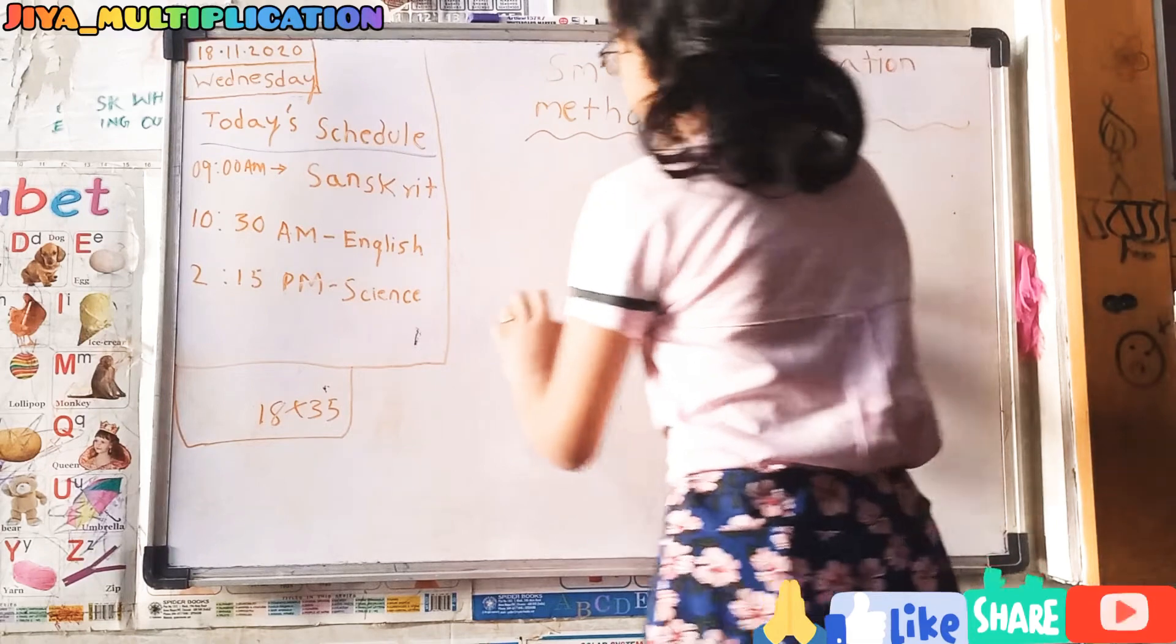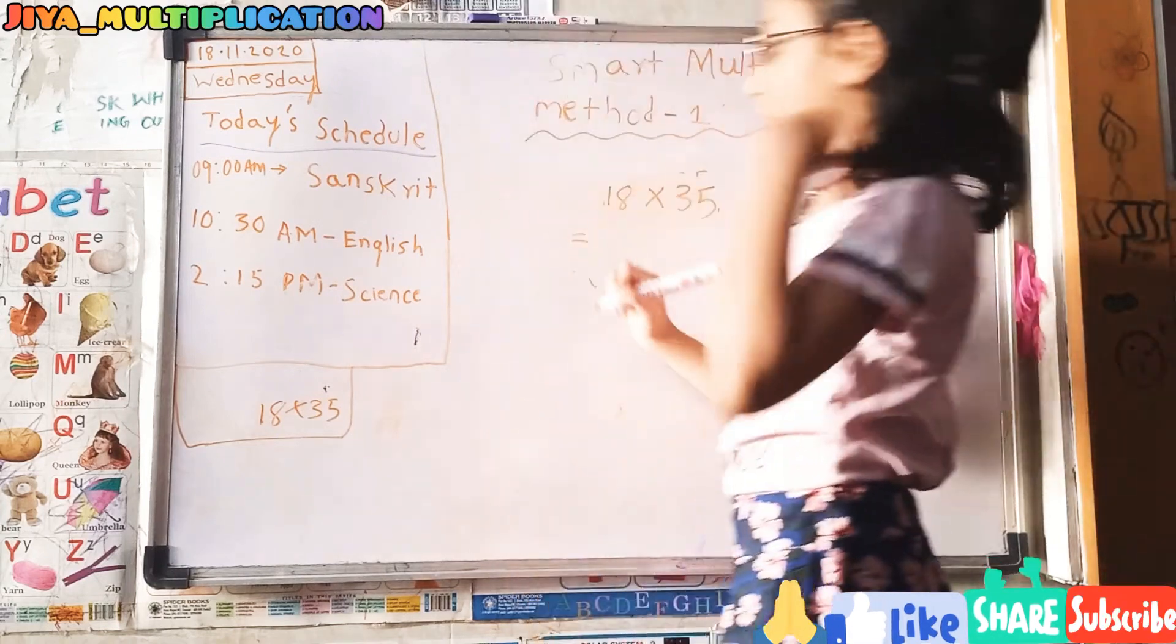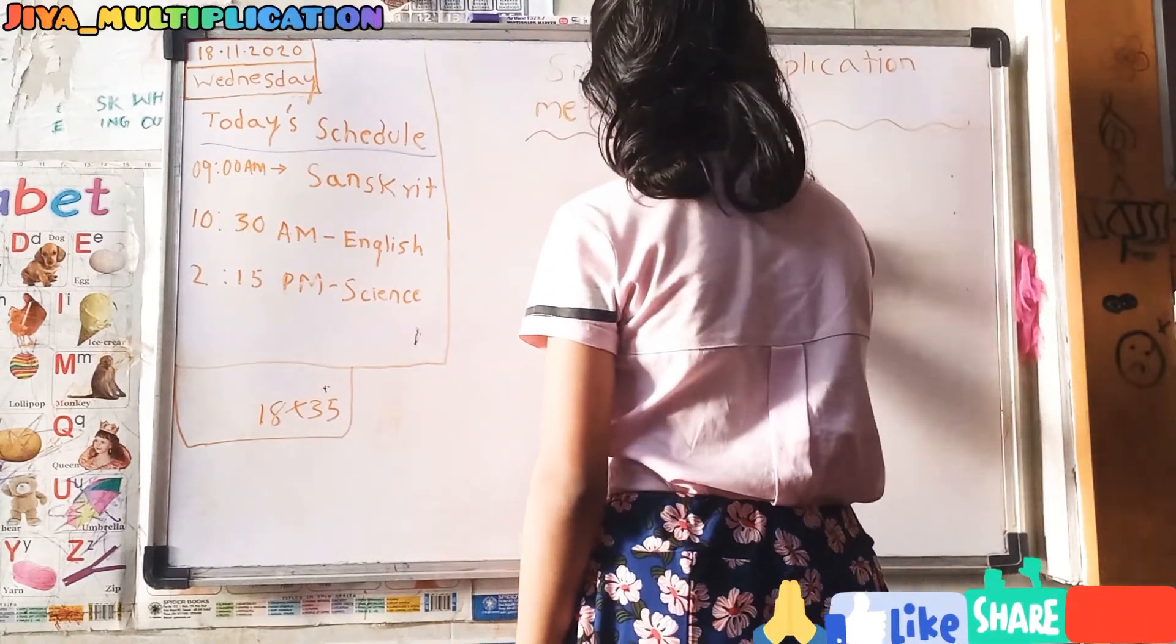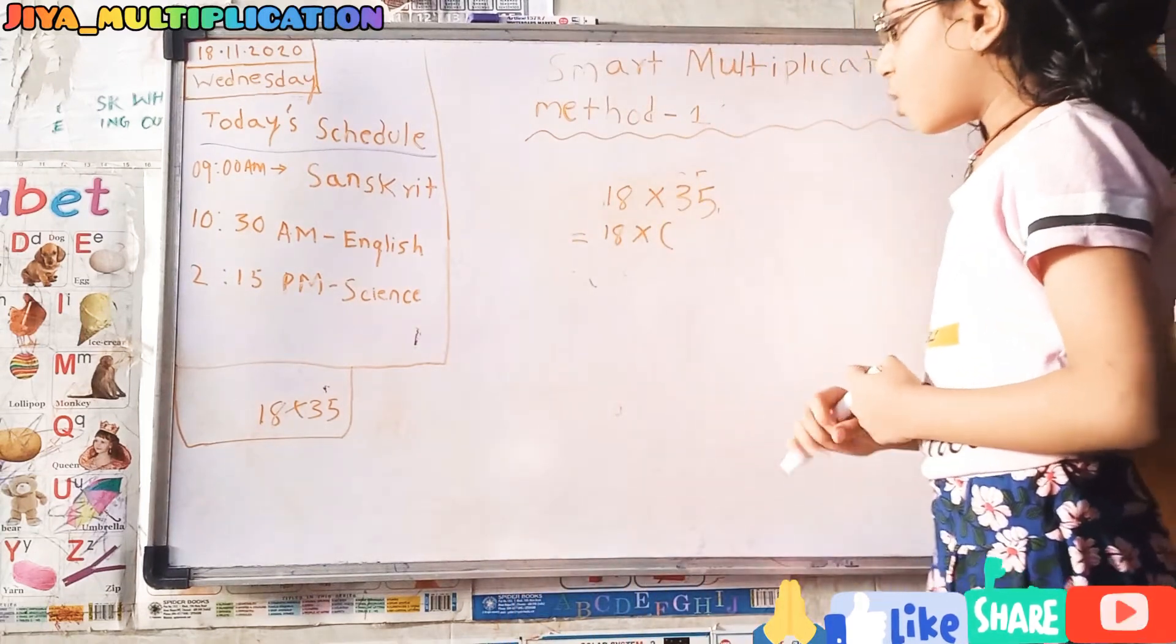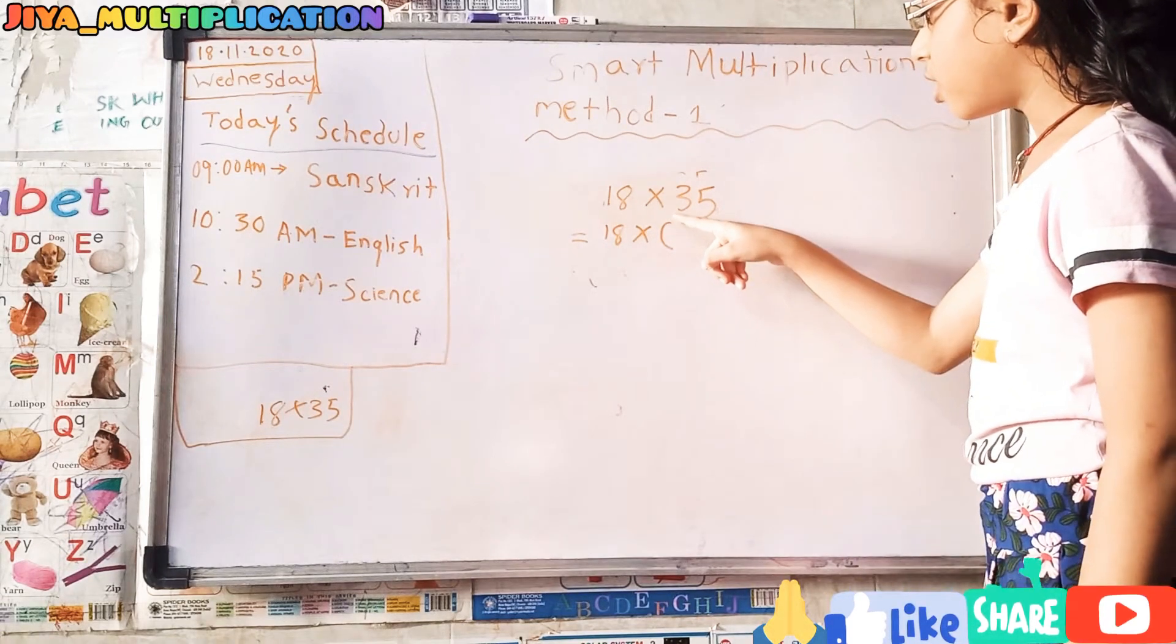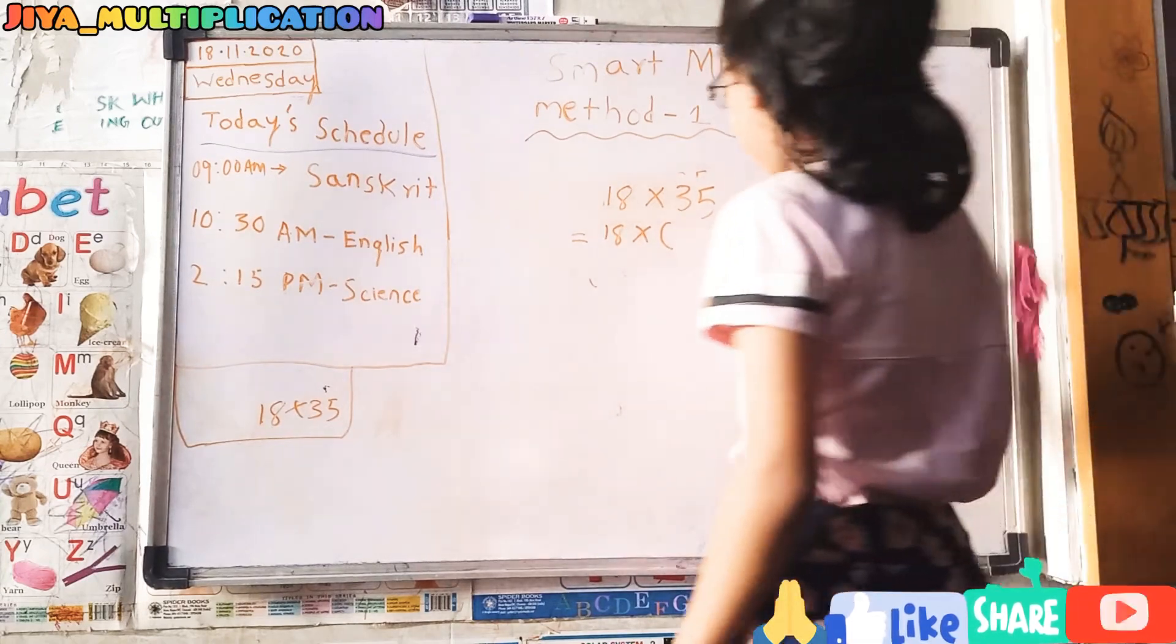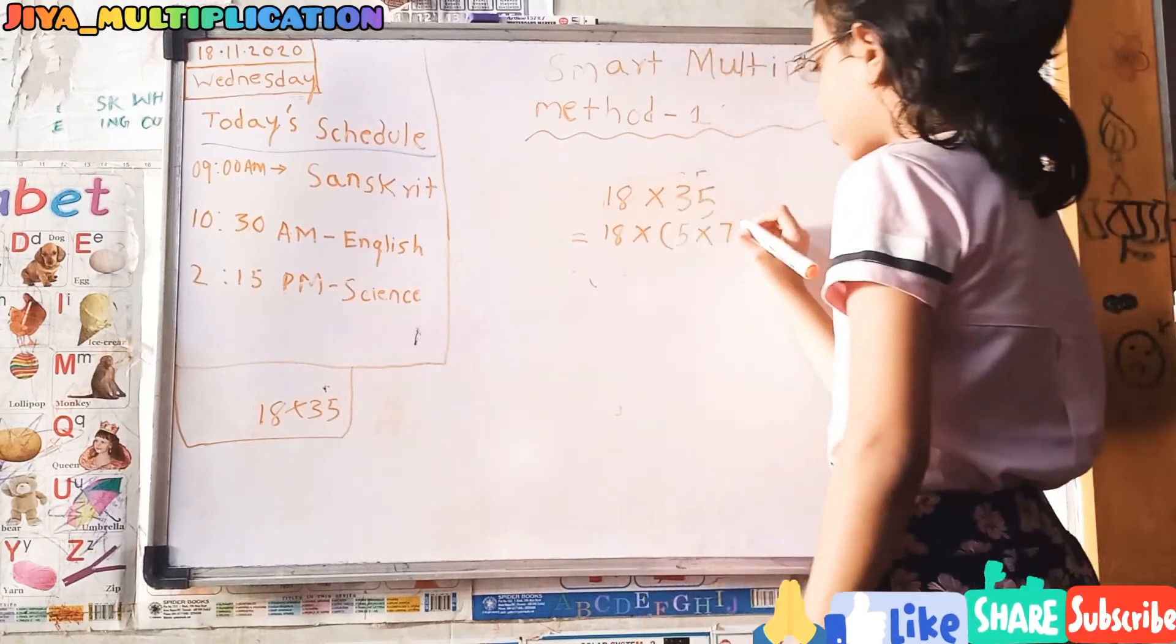We should write equals and we should write the same number 18. 18 into, and we should give an opening bracket, and which multiplication will come on 35. It will come 5 sevens up. I am writing 5 into 7 and closing the bracket.